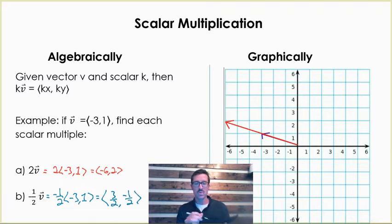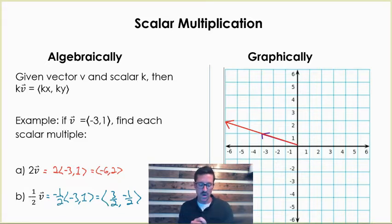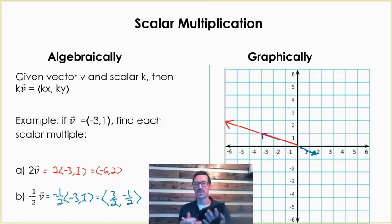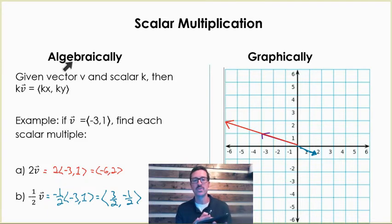Now, down here in our second example, there are actually two different things happening. We have the effect of the negative and the effect of the 1 half. If I go to the right 3 halves, which is 1.5, and down 1 half, it puts us right there — that is our vector from question B. The negative actually flipped it to go in the opposite direction; it reflected your vector. And then the 1 half compressed your vector and shrunk it down. After doing this, we should be able to do scalar multiplication both algebraically and graphically.